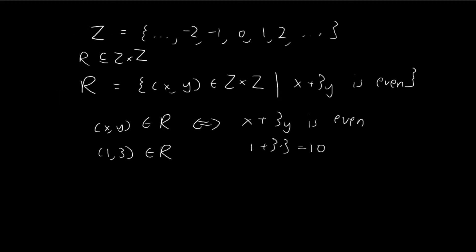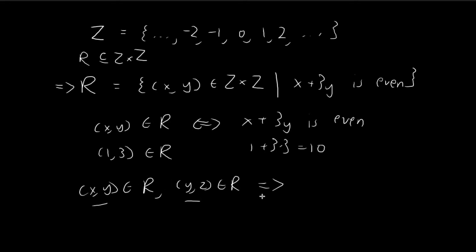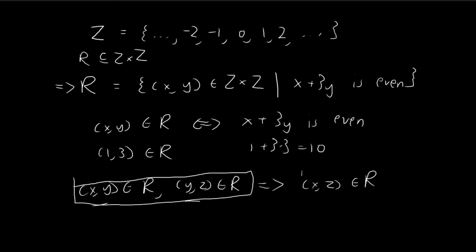What I want to show now is that this relation R is transitive. To show that R is transitive, we need to show that for the pairs x, y and y, z that are elements of R, if we know that these two ordered pairs are elements of R, then this must immediately imply that x, z is also an element of R. So we need to show that if these two statements are true, then this statement must be true — and that's what we're going to show.